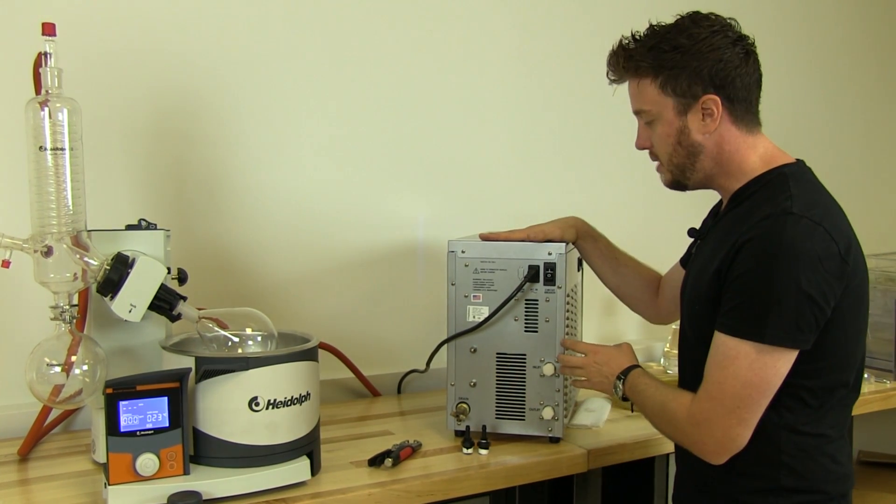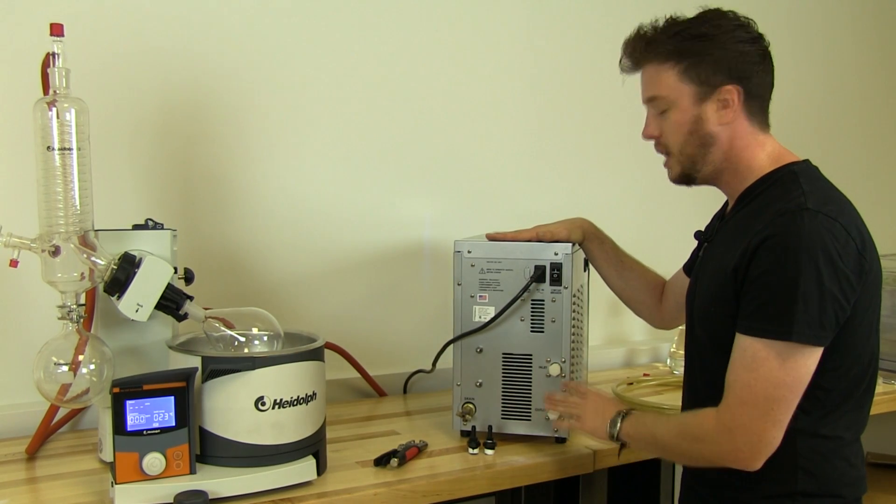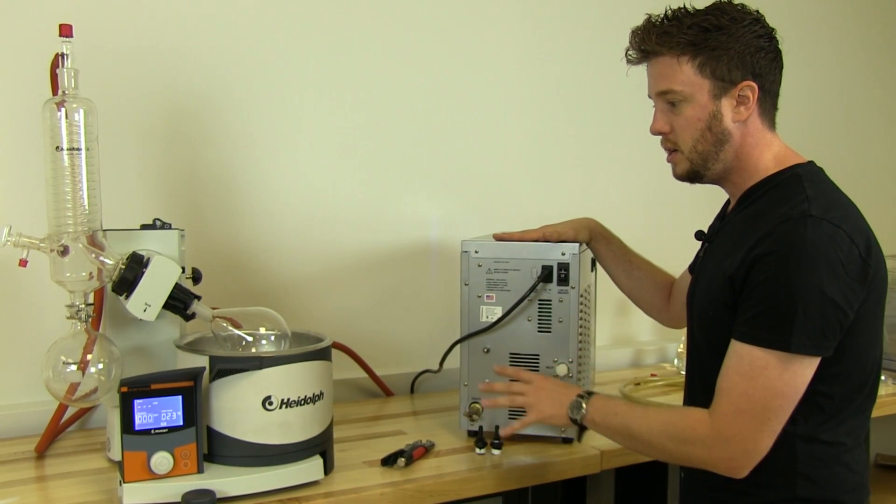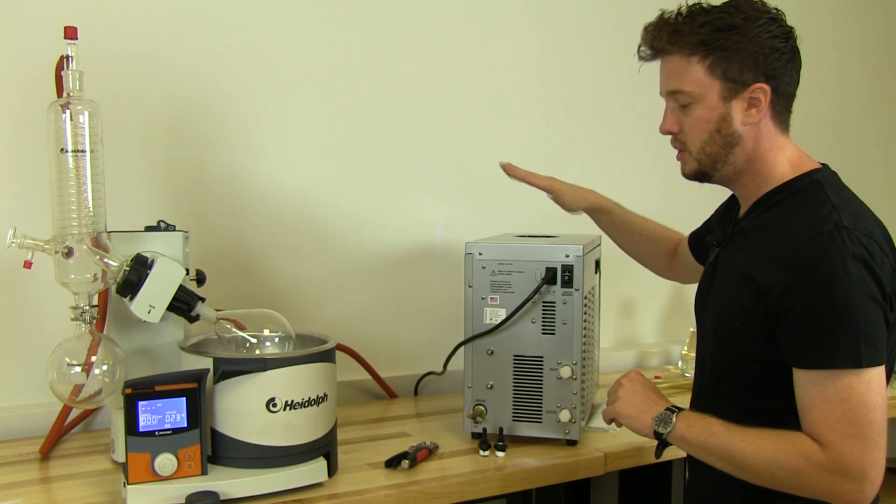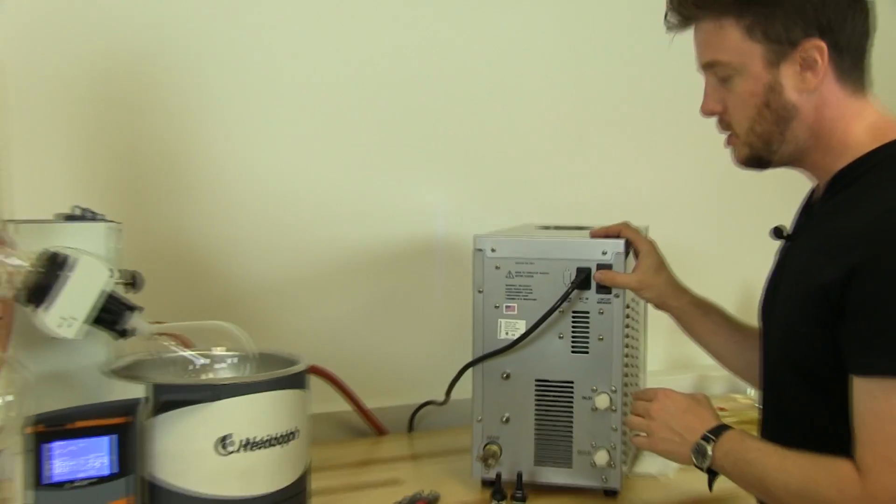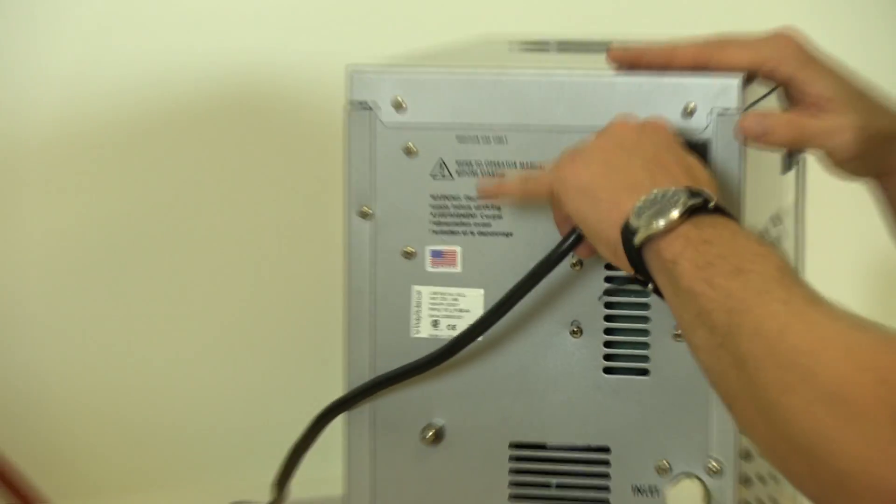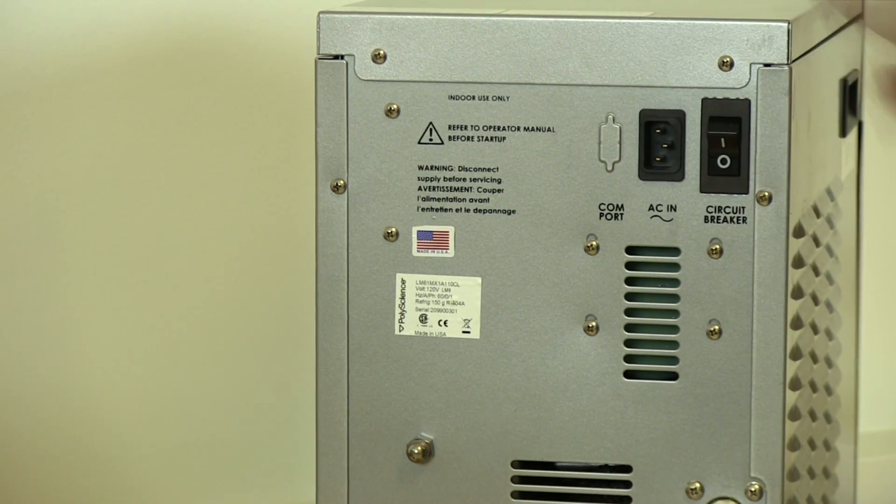Now we are at the rear of the LM6 mini chiller, and we're going to show you how to attach the fittings and connect it to the rotary evaporator, filling with glycol mix and getting this all rolling. First thing you want to do is make sure the machine is off. This chiller should not be connected to power during any of these processes.